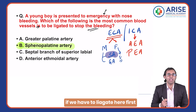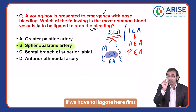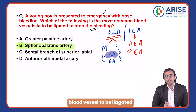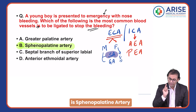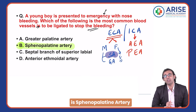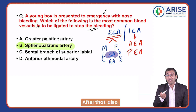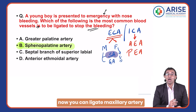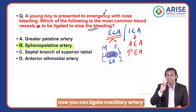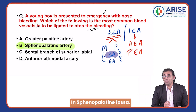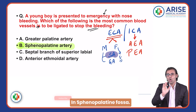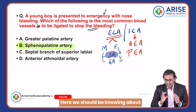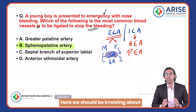Whenever there is severe nose bleeding, the first blood vessel to be ligated is the sphenopalatine artery. If there is still no stoppage in bleeding after that, you can then ligate the maxillary artery in the sphenopalatine fossa.